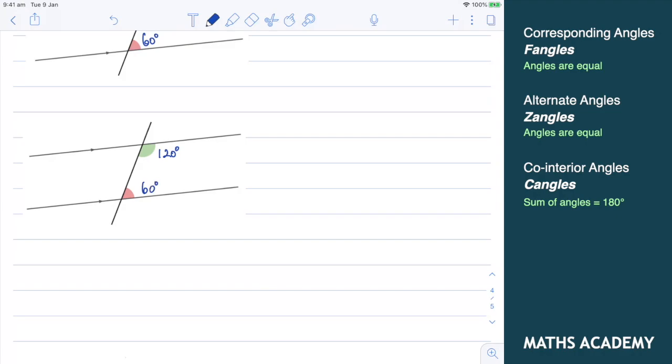There is a special case with co-interior angles. I'll draw one line here, a second parallel line here, and my transversal. That transversal is at an angle. But what if I draw a transversal which is perpendicular to the parallel lines? In this case here, these two angles are both right angles. So in this special case, the co-interior angles are equal. They're both 90 degrees.